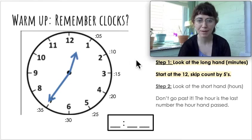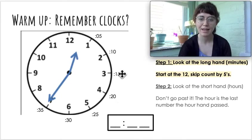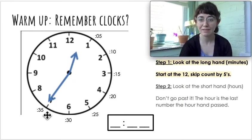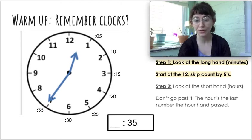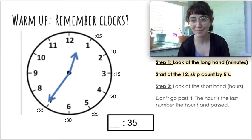So I skip counted by fives all the way around: 5, 10, 15, 20, 25, 30, 35. So I'm going to write down 35 for my minutes and I'm all done with my minutes.